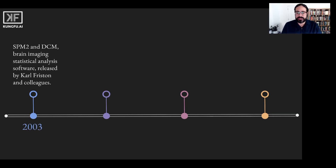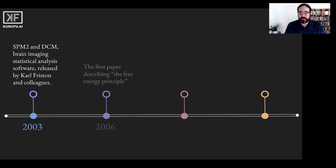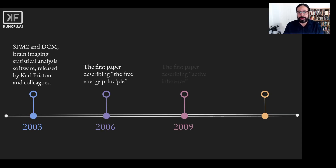These techniques were developed with the neuroscientist Karl Friston and his colleagues in the 1990s and turned into the well-known SPM and DCM software suites used for fMRI image analysis. In the early to mid 2000s, Friston and his colleagues extended the statistical methodology used in this software to provide a mathematical description of the brain. This led to two other theories: the free energy principle and active inference.